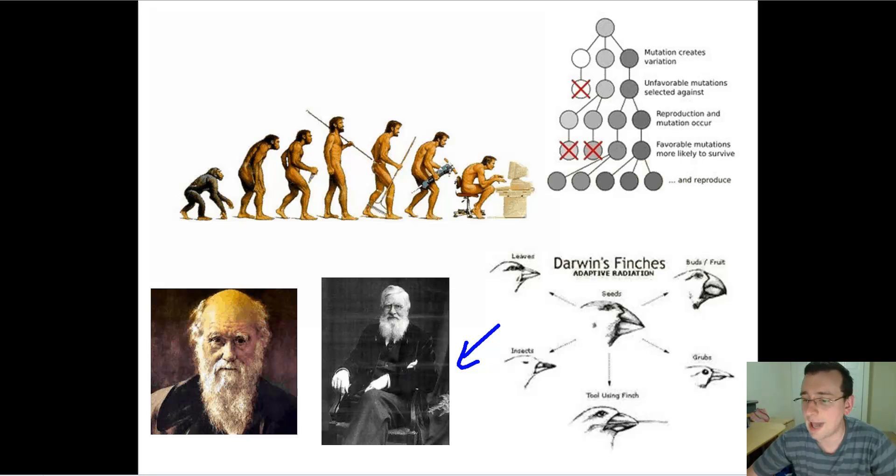Animals compete for access to limited resources, and differences between the animals are going to be the key in why they're going to survive. An expansion of this thing, which is a vision that Alfred Wallace had, not Darwin, is the idea of common ancestry.